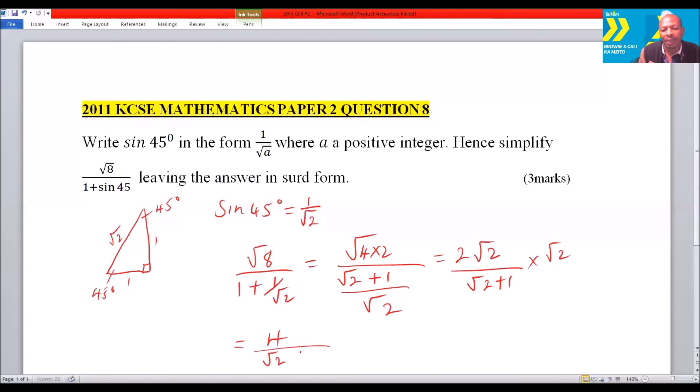When you multiply, you get this is 4√2 - 4. Here you have √2 × √2, which is 2.